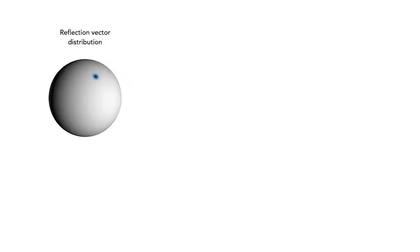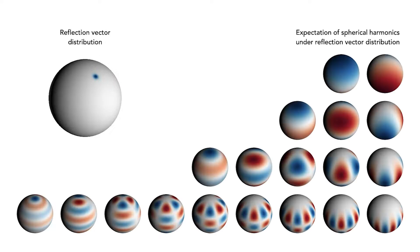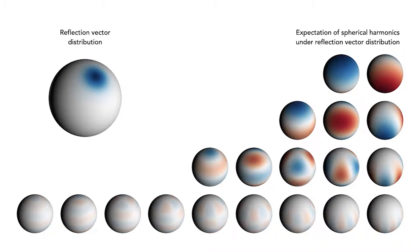We propose to encode the distribution of reflection directions as the expected value of a set of spherical harmonics under that distribution, which we call an integrated directional encoding. The encodings for smoother regions have more high frequencies as we see in the bottom row. For rougher materials with wider distributions, these high frequencies are attenuated, which results in the network producing a smoother view-dependent outgoing radiance.